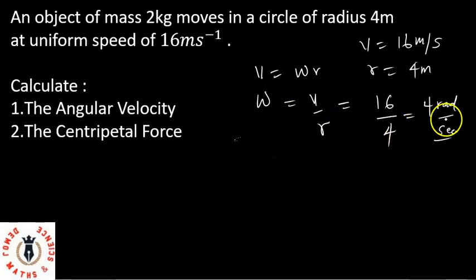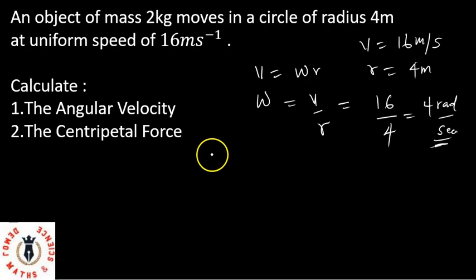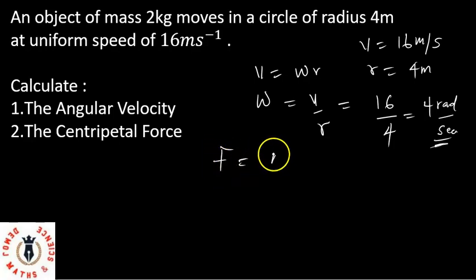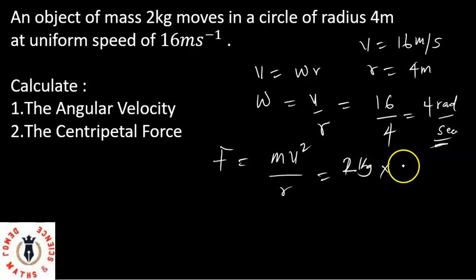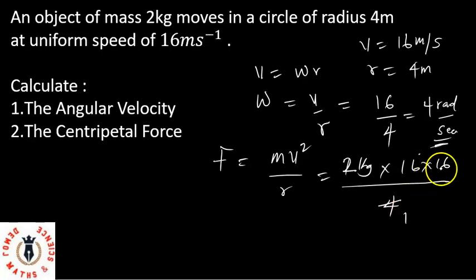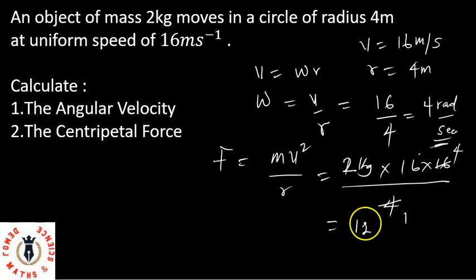Remember that W is the angular velocity and it is measured in radians per second. Now, the centripetal force — remember, it is the force directed towards the center of a circle. So F equals MV squared over R, which equals M times V squared over R. My M is 2 kg, my V is 16, so that's 16 squared, and my R is 4. Simplifying: 4 into 16 gives 4, then multiply 4 by 16 by 2, giving 128 newtons.